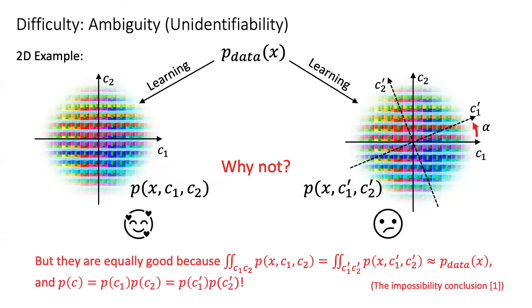both branches of representation shown here are equally good due to the same marginal data distribution and factorized prior distribution. However, only the left one is disentangled.